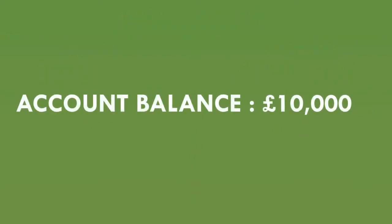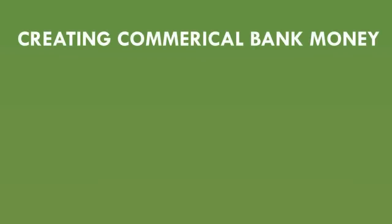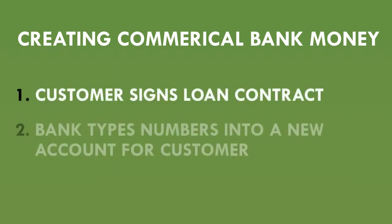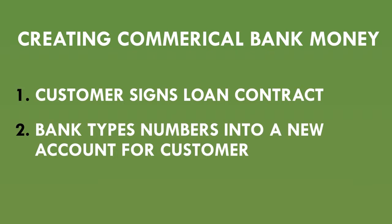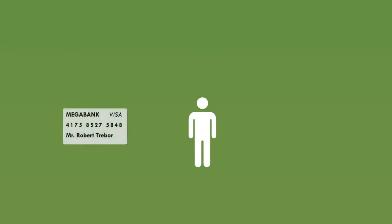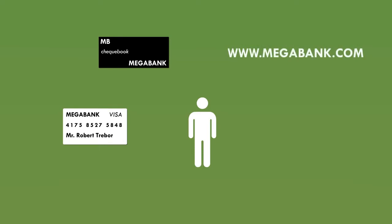When Robert goes to the cash machine to check his balance, he'll see £10,000 that he didn't have before. All the bank has done to create this new money is type some numbers into an account — it hasn't reduced anyone else's balance or taken money from a pensioner and moved it into Robert's account. The process of creating commercial bank money is as simple as: one, a customer signing a loan contract, and two, the bank typing numbers into a new account. Robert can now spend this money using his debit card, chequebook, internet banking transfers, or by taking cash out of an ATM.